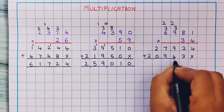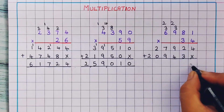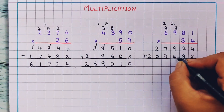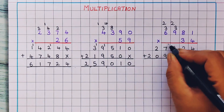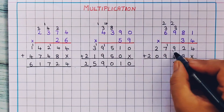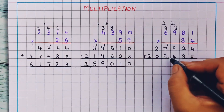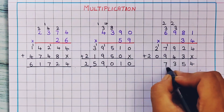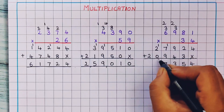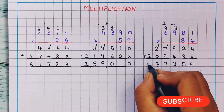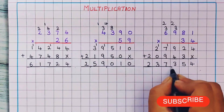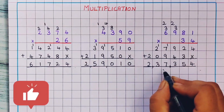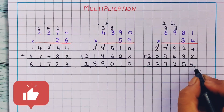Now I will do the addition. 4 plus nothing is 4. Now 2 plus 3 is 5. 9 plus 4 is 13, so 1 and 3. 7 plus 1 is 8, 8 plus 9 is 17, so I will write here 1 and here 7. 2 plus 1 plus 0 is 3. And here 2. So the answer is 2,37,354.